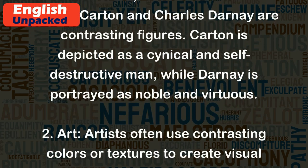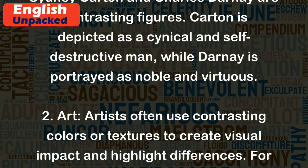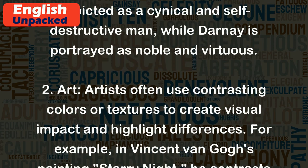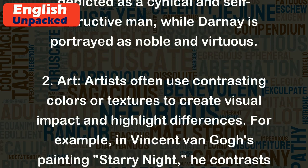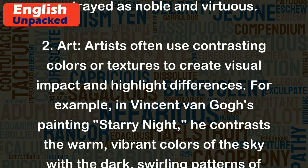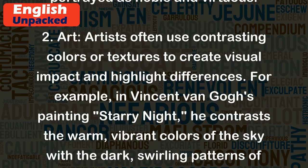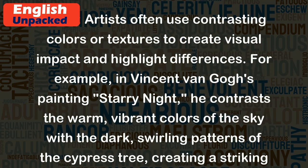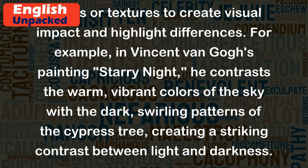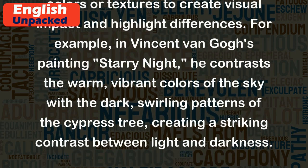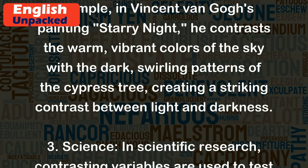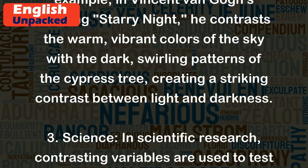Art: Artists often use contrasting colors or textures to create visual impact and highlight differences. For example, in Vincent van Gogh's painting Starry Night, he contrasts the warm, vibrant colors of the sky with the dark, swirling patterns of the cypress tree, creating a striking contrast between light and darkness.